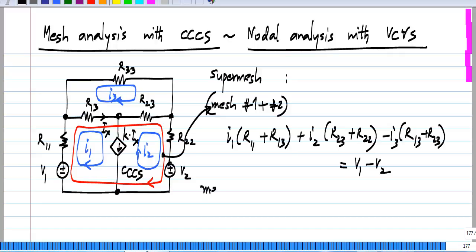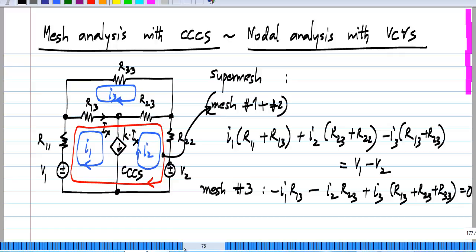And the third mesh is not affected by this. So, for mesh number 3, we have the same equation that we had before. This equals zero.